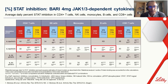Looking at the effect on different types of cells — CD4 T cells, NK cells, monocytes, B cells, and CD8 cells — we can summarize that the IC50 values for any given JAK inhibitor were similar across cell types and were dose-dependent.